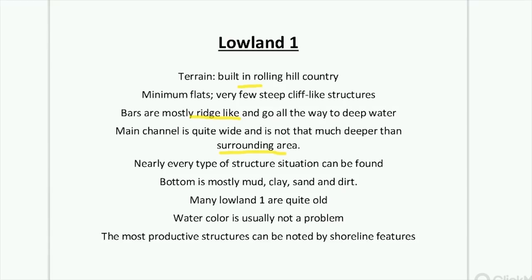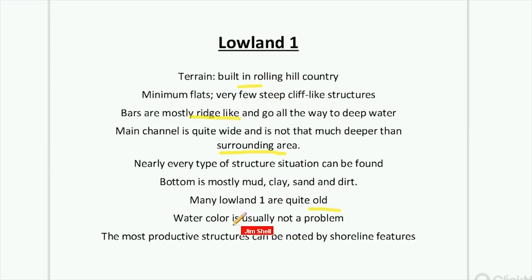Buck has found that many Lowland 1s are quite old, which probably means a lot of the snags are gone. The early reservoirs, built in the 1920s, 30s, and 40s, were pretty much clear-cut — all the trees were taken down. As it became later, in the 50s, 60s, and 70s, they tried saving money when building reservoirs and left a lot of trees standing. So the older the reservoir, the more likely it's going to be clear-cut. In a Lowland 1, most of the productive structures can be noted by shoreline features.